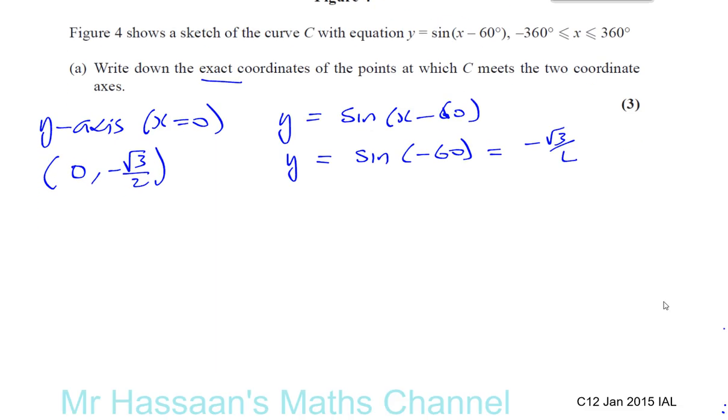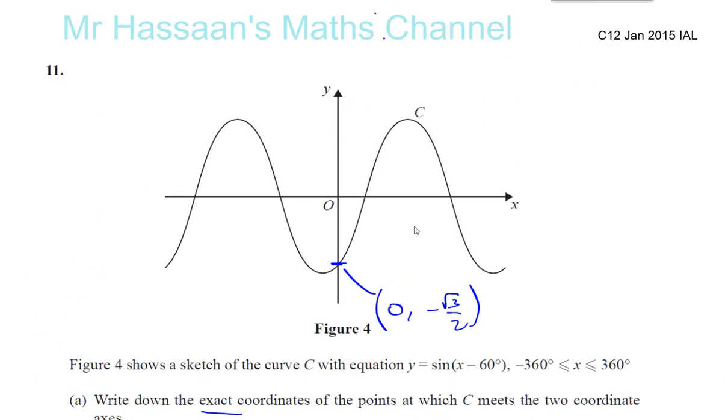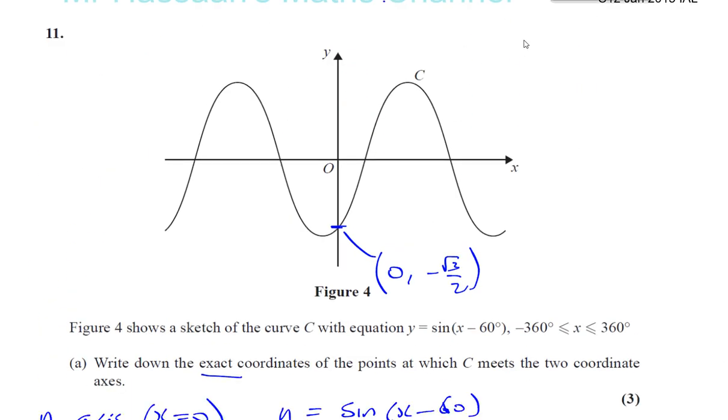Okay, now we're going to find where it hits the x-axis. And that can be done in a number of ways. We can do it by using when y equals 0, or we could actually do it by just thinking about transformations. If you have y equals f and you've got inside the function x minus A, that means it shifts A units to the right.